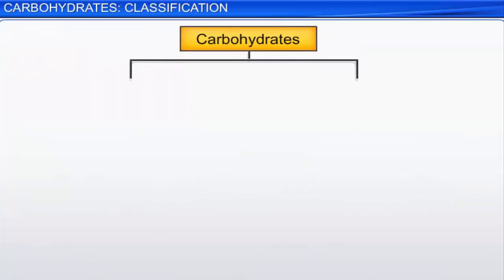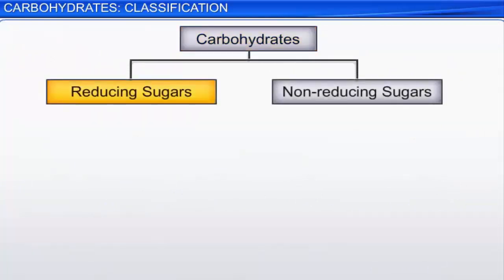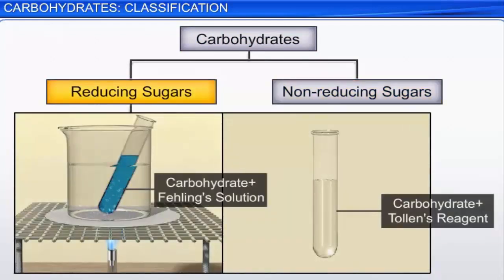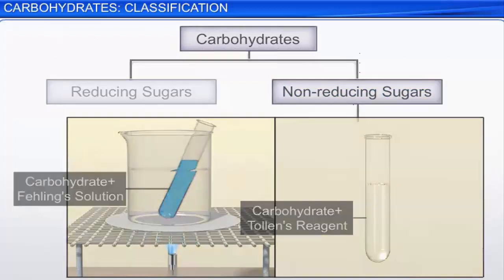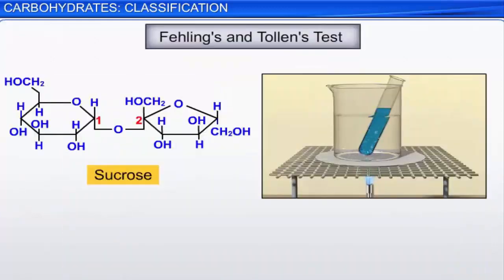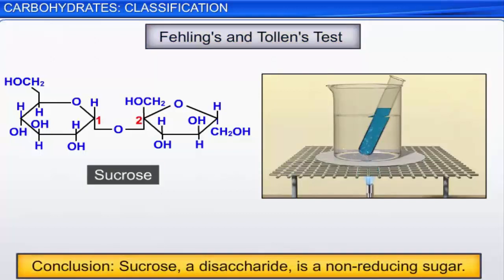Carbohydrates can also be classified as reducing sugars and non-reducing sugars. Reducing sugars are carbohydrates that reduce Fehling's solution or Tollens' reagent. Non-reducing sugars are carbohydrates that reduce neither Fehling's solution nor Tollens' reagent. All monosaccharides are reducing sugars. Sucrose would give negative results with both Fehling's and Tollens' tests; hence it is a non-reducing sugar. Most disaccharides are reducing sugars, and sucrose is unusual in this respect.